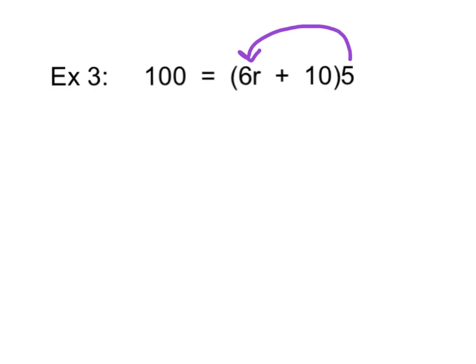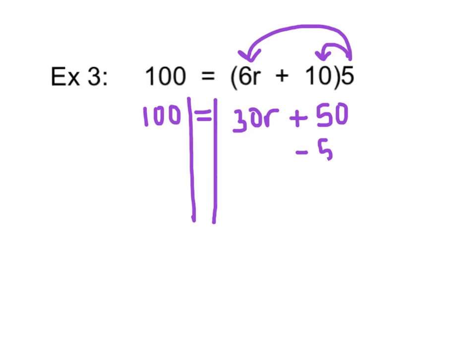I'm going to take the 5 times the 6R, and that's going to give me 30R. I will also take the 5 times the 10, and that's going to give me 50. That expression will be equal to 100 from the other side of the equal sign. Now we simply have a multi-step equation. We've been working on these for about a week now, so this should be a breeze.